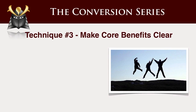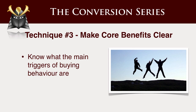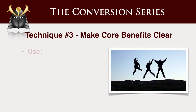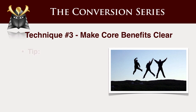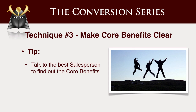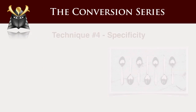Technique number three is make your core benefits clear. Know what the main triggers of buying behaviour are, and if you can't state those, go and ask your customers. Make them really clear on your website — I see a lot of times these are buried deep and you're losing sales because of it. Ask yourself: is it obvious to my customers what my core benefits are when they visit the first pages they'll get to on my site? This is good use of headlines, bullets, and graphics. You also want to talk to the best salesperson in the organisation — often if it's a large company, that isn't the owner. Get them to pitch you on the product and you'll often find out subconsciously what really makes the website sell.